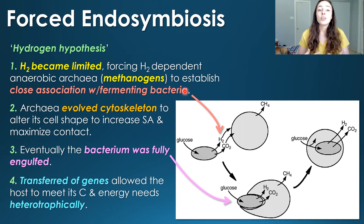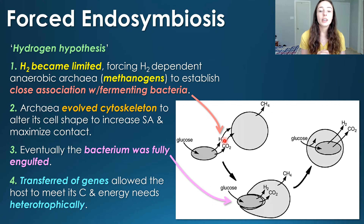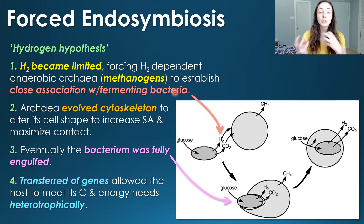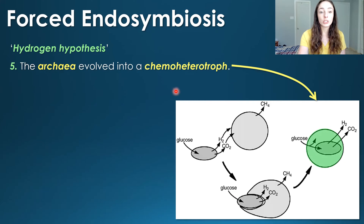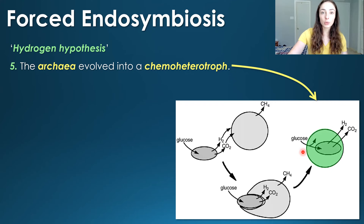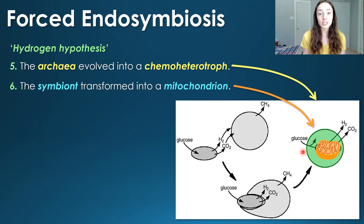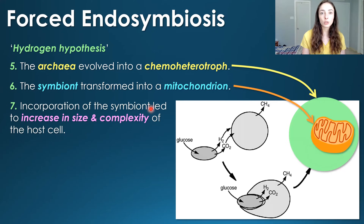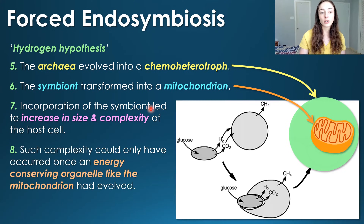At the beginning it was an autotroph, using carbon dioxide for its carbon source and hydrogen as an electron donor — it didn't need organic carbon. However, the heterotrophic metabolism genes of the fermenting bacteria transferred to the host cell, causing it to evolve into a chemoheterotroph using glucose as a source of reduced organic carbon and gaining more energy from its metabolic process. The symbiont evolved into a mitochondrion, and its incorporation led to an eventual increase in size and complexity of the host cell.